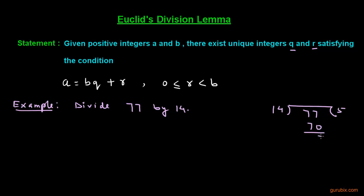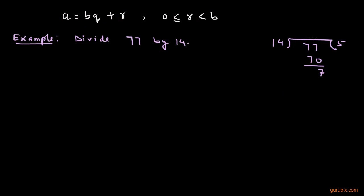Here it goes 5 times and 7 is the remainder. We can write this process by using Euclid's Division Lemma like this.